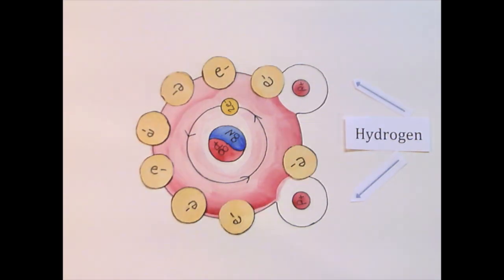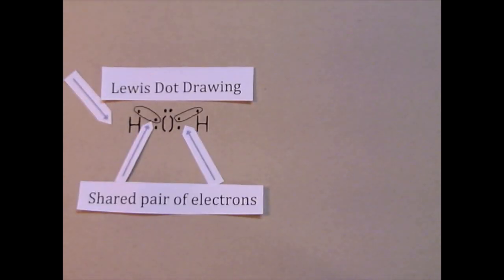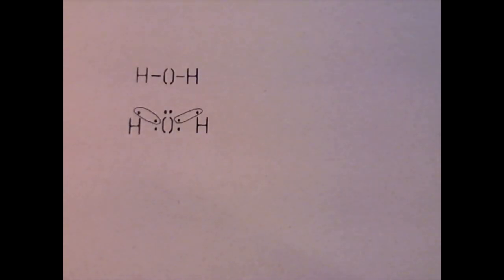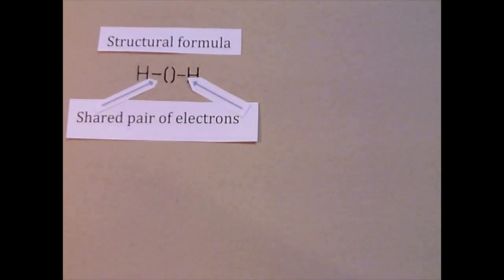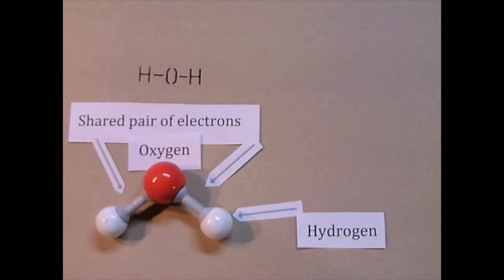We can use a Lewis dot drawing to illustrate this. We would draw a structural formula like this, where the line represents one pair of shared electrons between each hydrogen and oxygen.